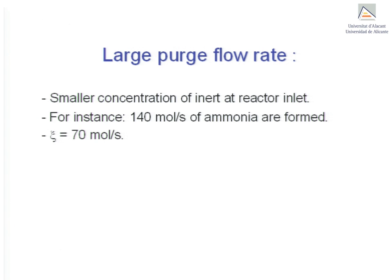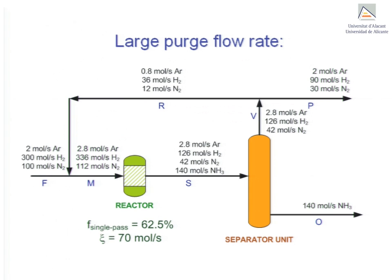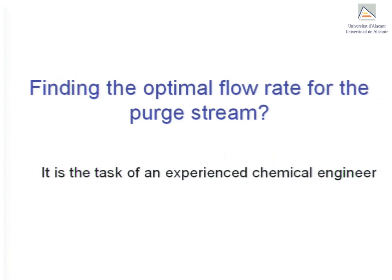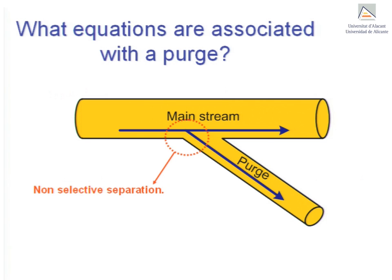Maintaining the single pass conversion at 62.5% and making the necessary calculations according to a steady-state scenario, this represents the resulting situation. It is important to note that designing the purge to have a larger flow rate produces a small inert concentration at the reactor inlet stream M. In this case 0.62% molar, very close to the 0.5% molar of stream F. Determining the optimal size of the purge flow rate is the task of an experienced chemical engineer.